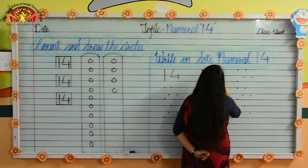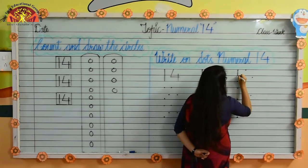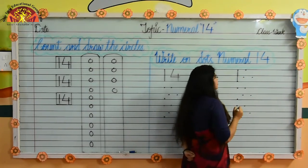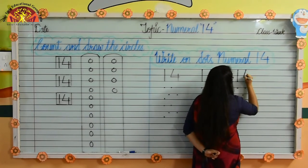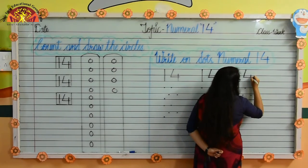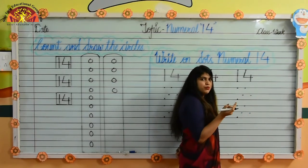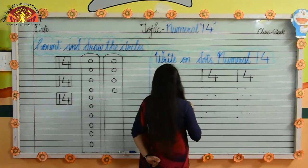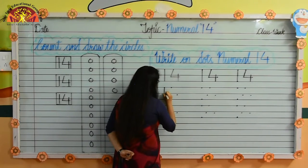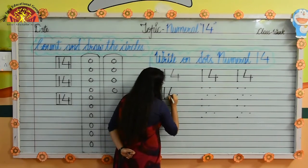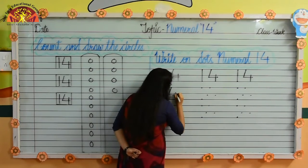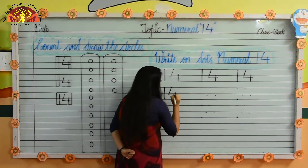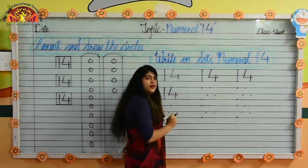Now do it again. Make standing line, like this. Then make slanting line, then sleeping line. Now standing line. Tell me kids, which numeral is this? 14. Now again. Make standing line, like this. Then make slanting line, then sleeping line. Now make standing line. 14.